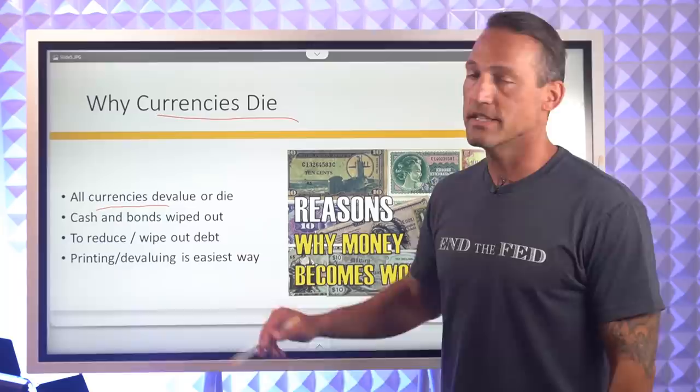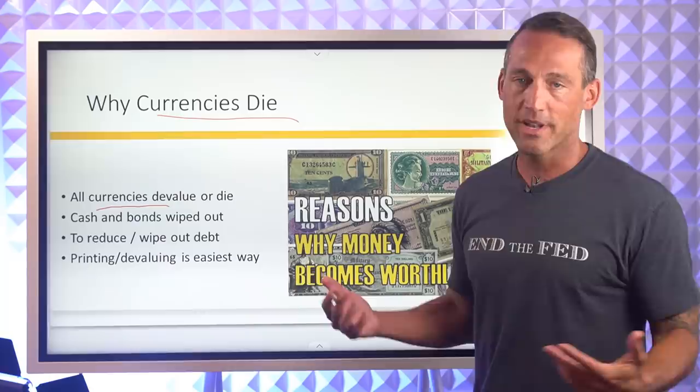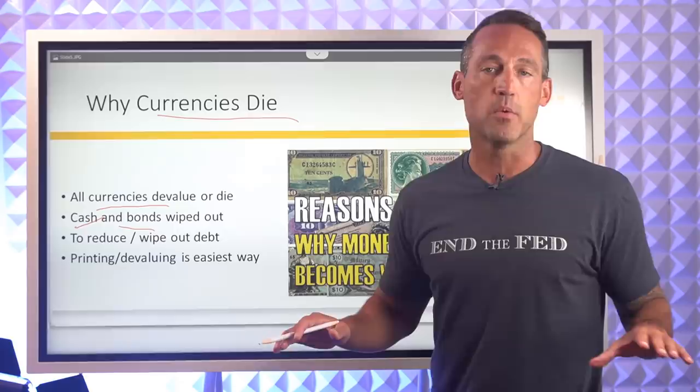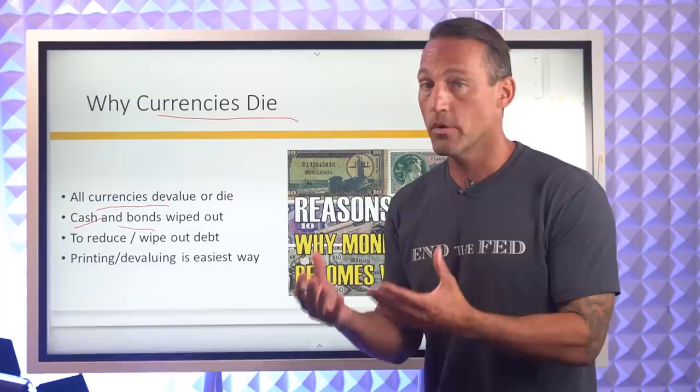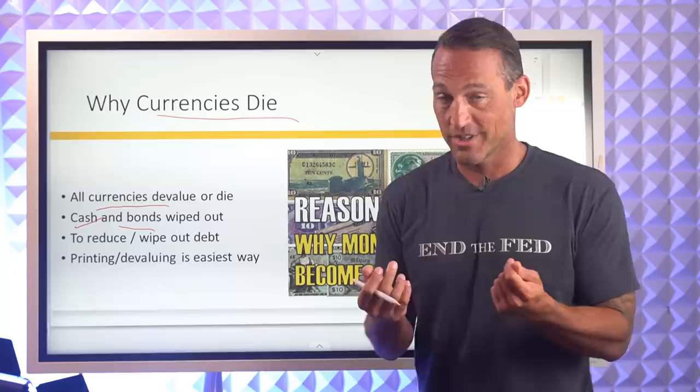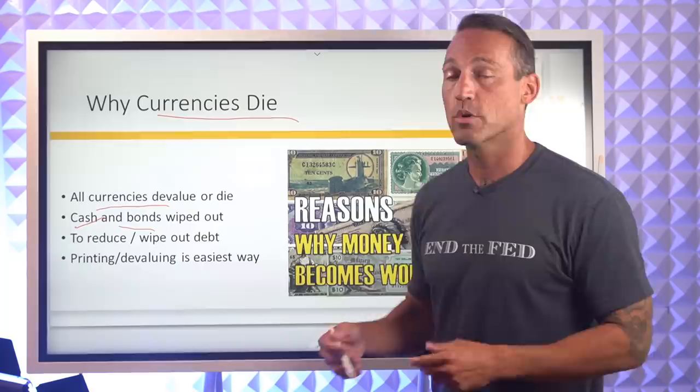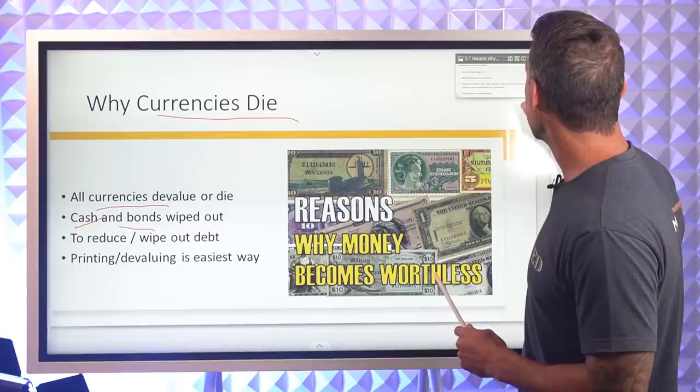Why do currencies die? The first thing is that all currencies — and we can say this conclusively — all currencies either devalue or die, or both. When that happens, cash and bonds are completely wiped out. When the currencies die, we know from history that cash — which is an IOU, a claim — and of course bonds, they all get wiped out.